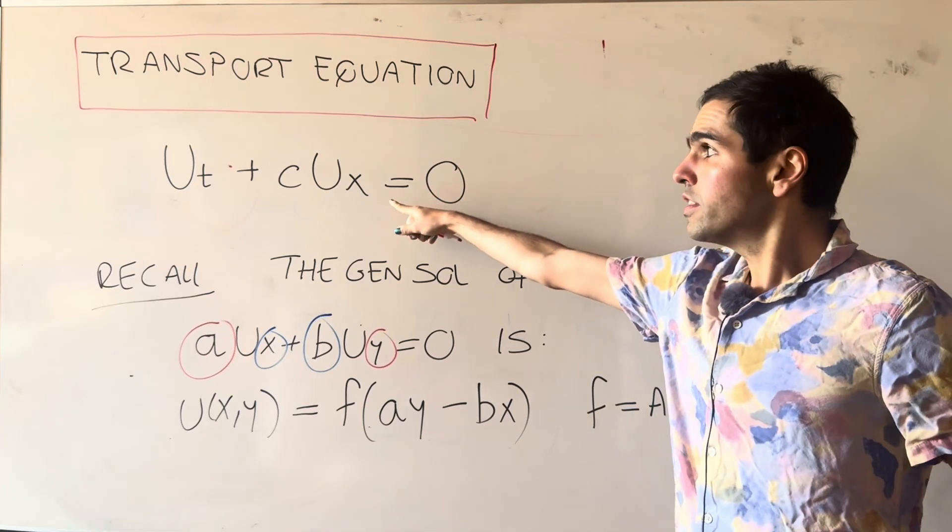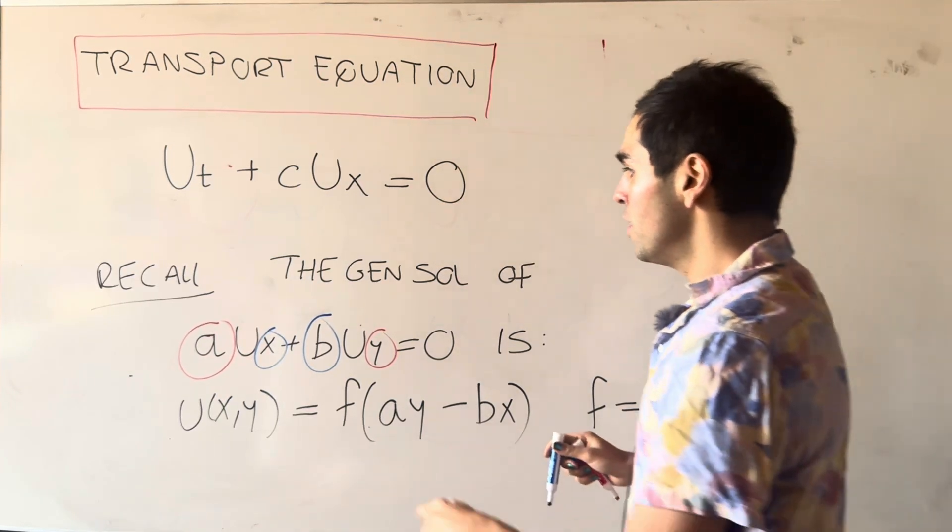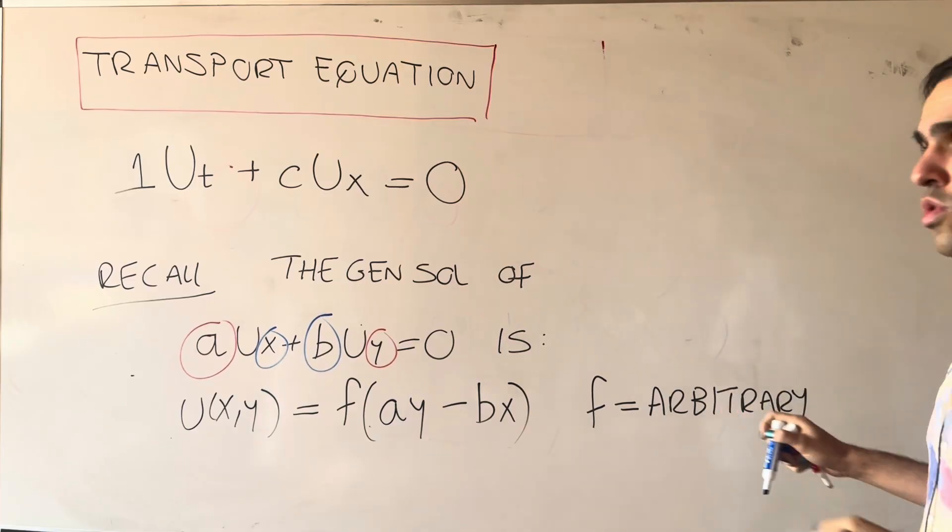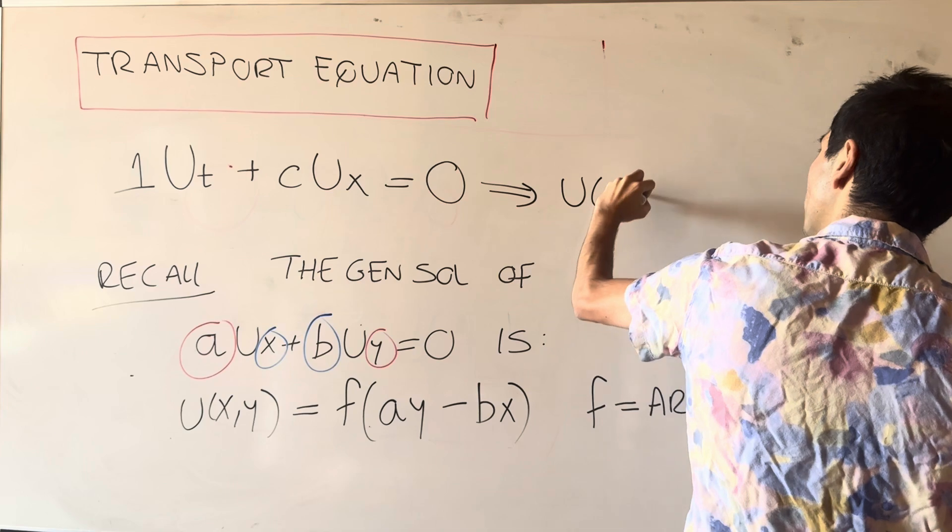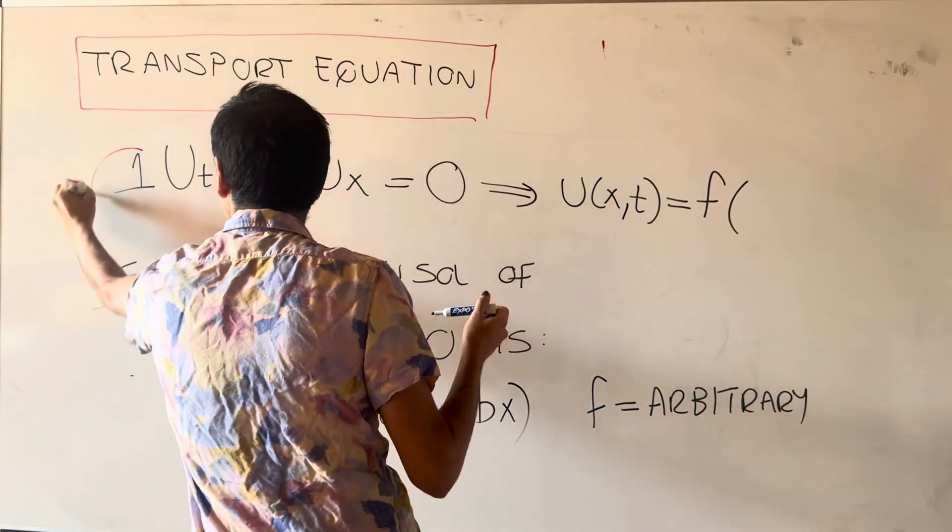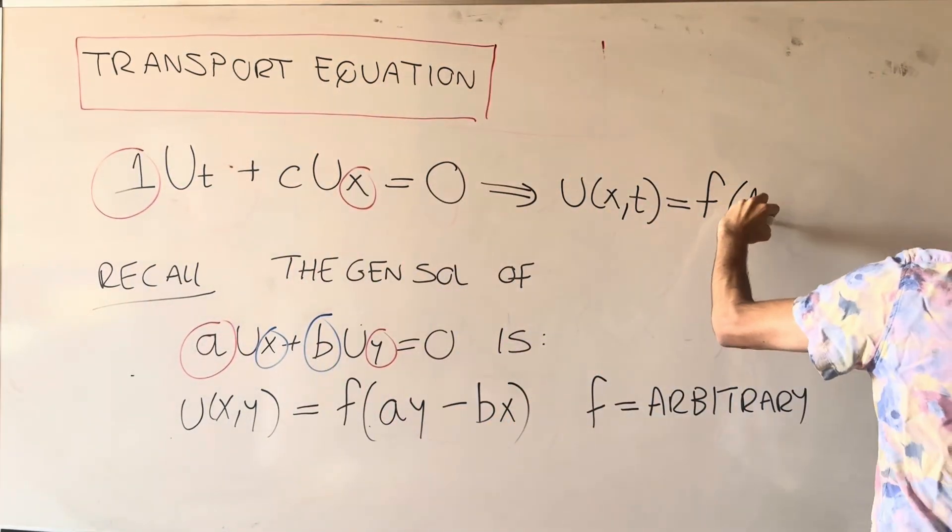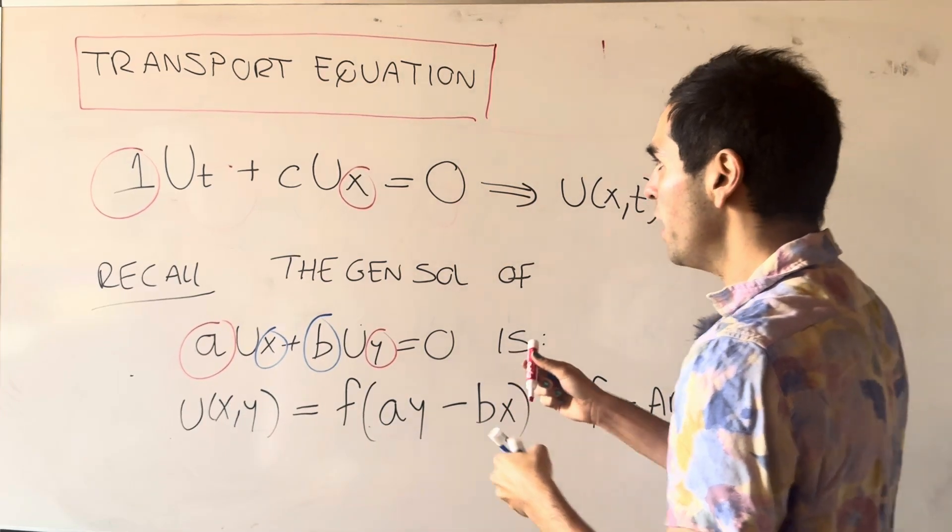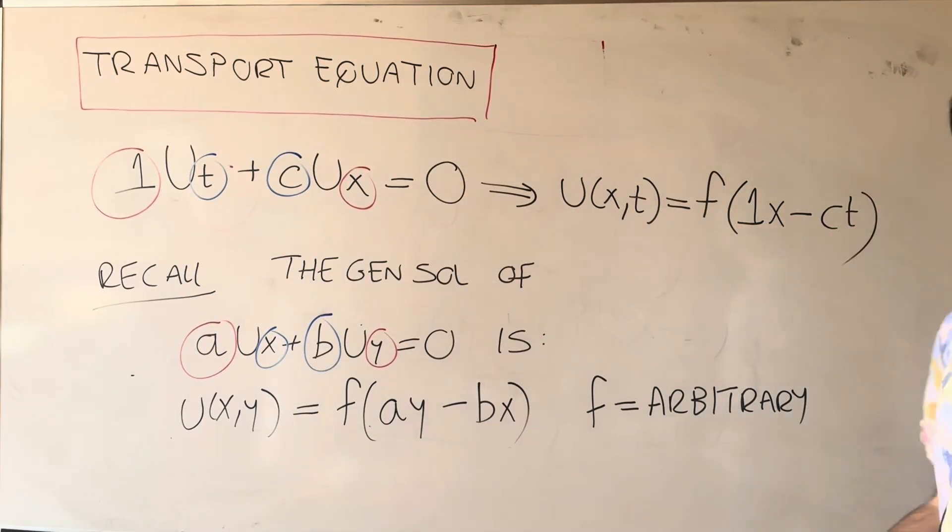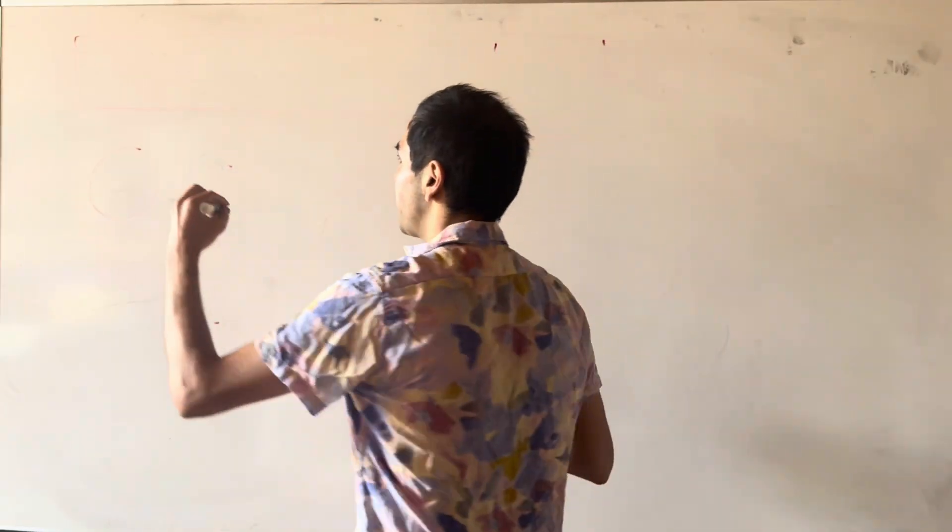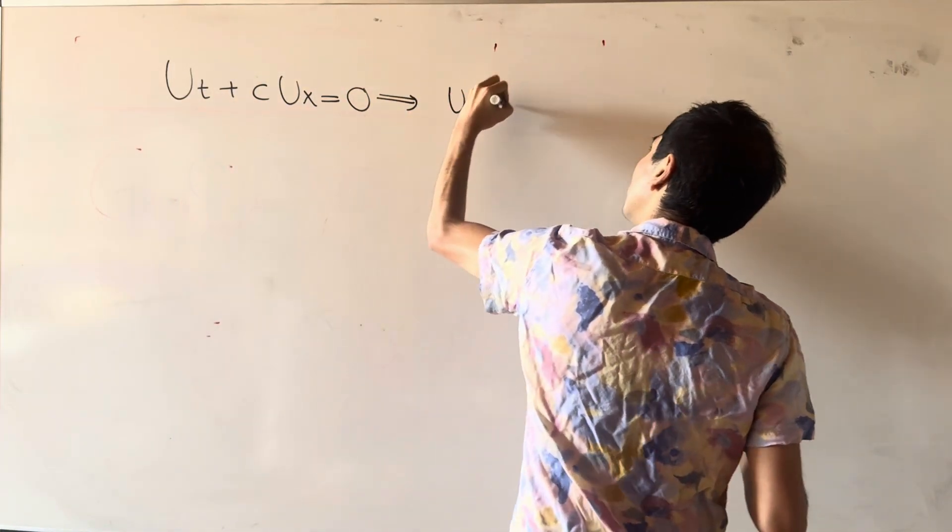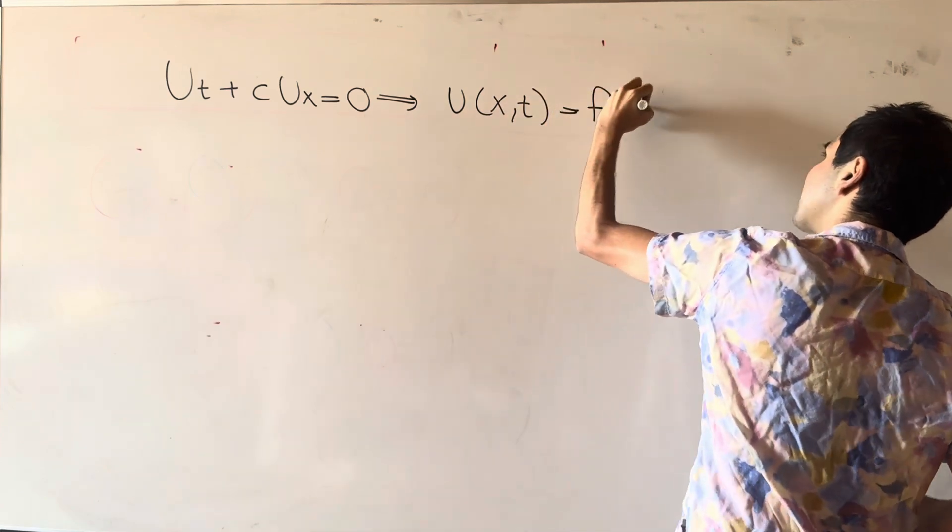Notice this equation is of the same form, where a in this case is 1 and b is c. So in this case, to solve this PDE, you simply have u of xt is f of 1 times x minus c times t, which now we'll just clean up. So to solve ut plus c ux equals 0, we now get u of xt is f of x minus ct.